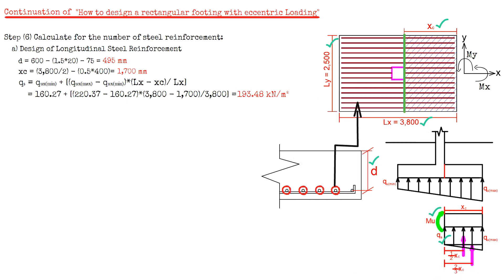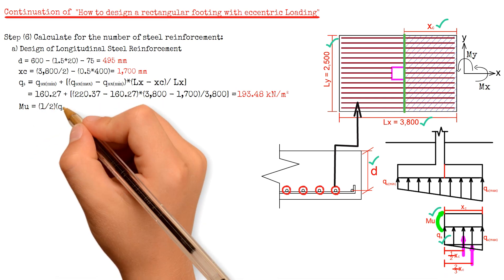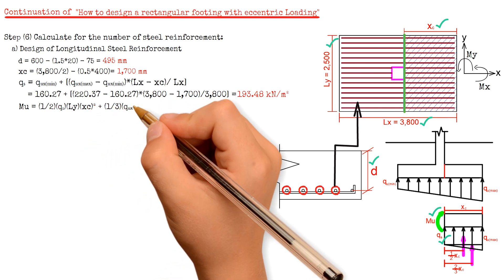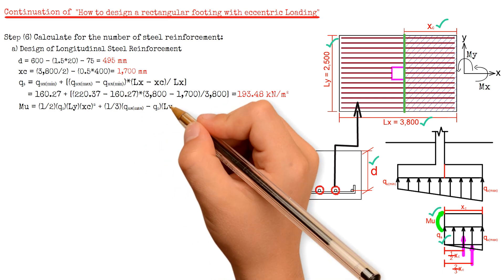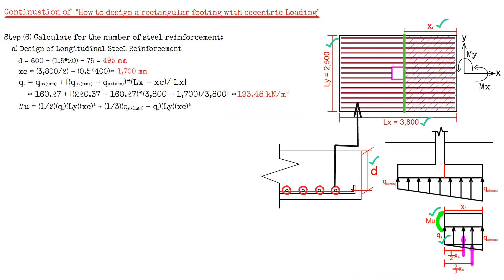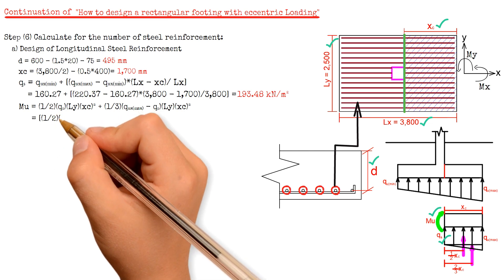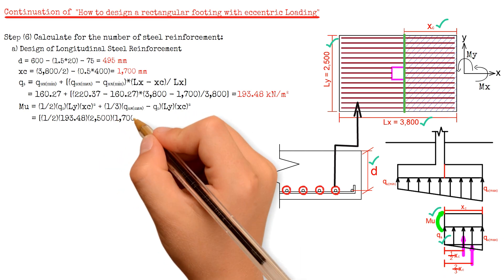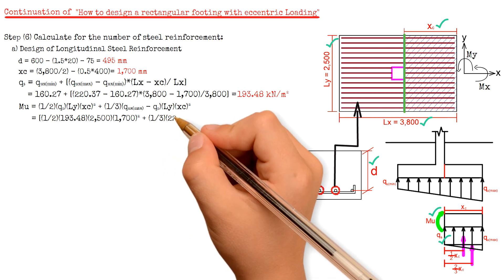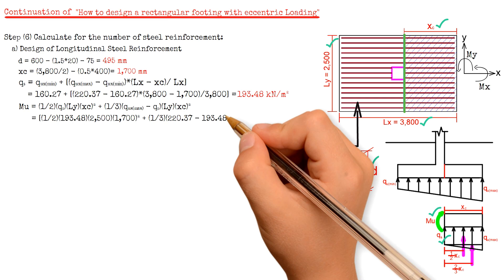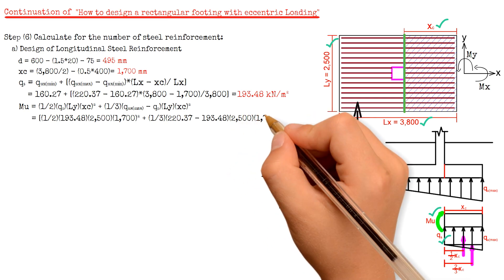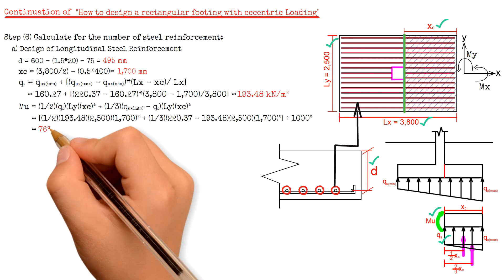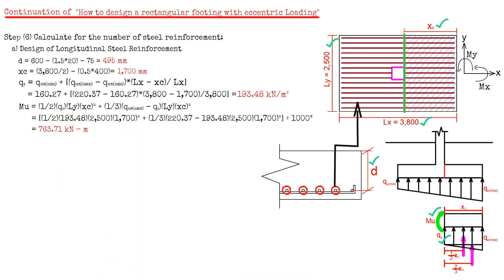Next, we calculate for the moment Mu, which equals one-half of q sub s times Ly times x sub c squared, plus one-third times (q_u_x_max minus q sub s) times Ly times x sub c squared. We have one-half times 193.48 times 2500 times 1700 squared, plus one-third times (220.37 minus 193.48) times 2500 times 1700 squared, giving a value of 763.71 kN·m.